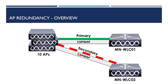Upon boot, our APs will then build CAPWAP tunnels to each of the controllers that have been primed. The AP however will only associate to a single controller. The additional CAPWAP tunnels are built with the other primed controllers in preparation if the AP needs to associate to them. This then drastically reduces the amount of time taken for the APs to fail over to the redundant controllers.